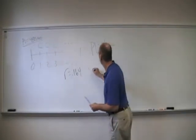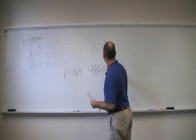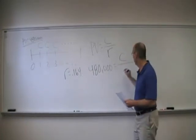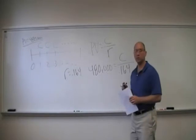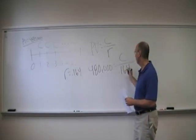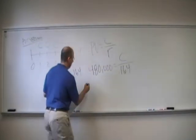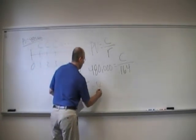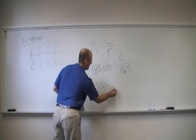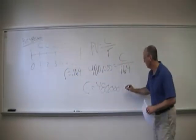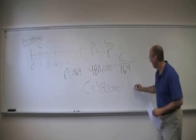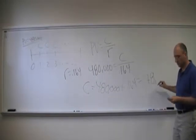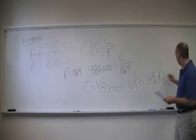We know the present value of the building is $480,000. So that's equal to the cash flow over 0.164. Multiplying both sides of the equation by 0.164, the regular cash flow is equal to $480,000 times 16.4%, which gives us $78,720.